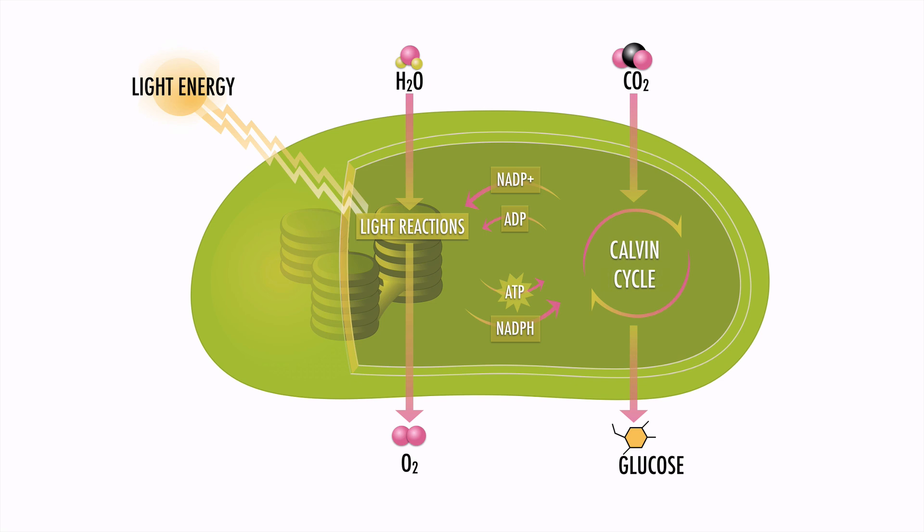In the Calvin cycle, six carbon dioxide molecules from the atmosphere, along with plenty of ATP and NADPH, are converted into a molecule of glucose, which has the formula C6H12O6. It takes six turns of the Calvin cycle to create glucose. Then the plant can use that glucose for energy or to make cellulose.